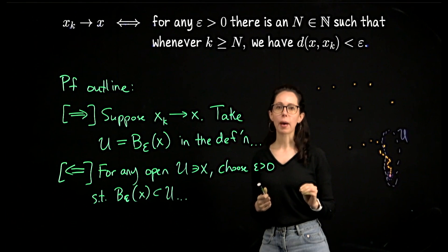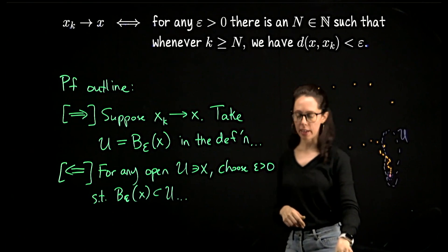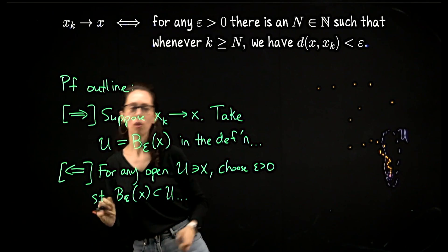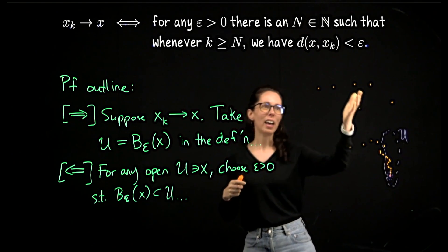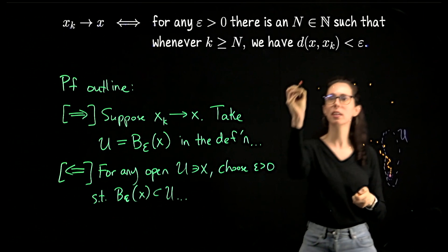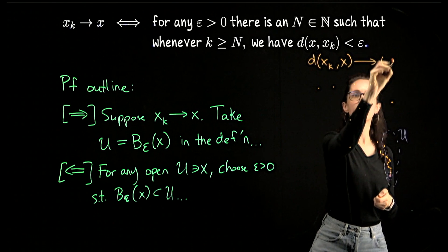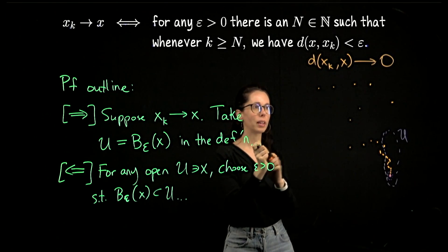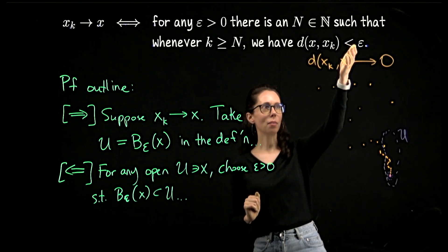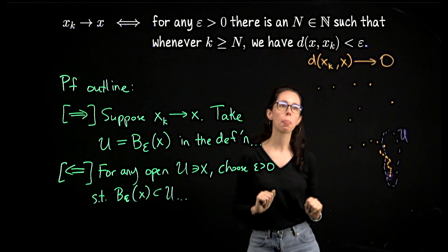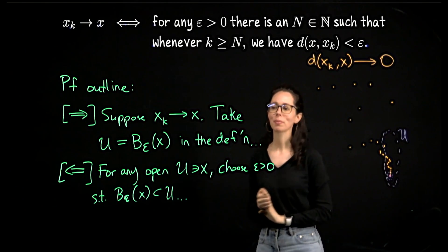One thing I like about this characterization is that it emphasizes the notion of distance. As a corollary — corollary to a definition is a funny idea, but basically — if a sequence is converging, then the distance from the sequence terms to the limit is going to zero. That's not surprising, but it's probably worth stating explicitly: we can shrink the distances arbitrarily small, so the distance from sequence terms to the limit goes to zero.